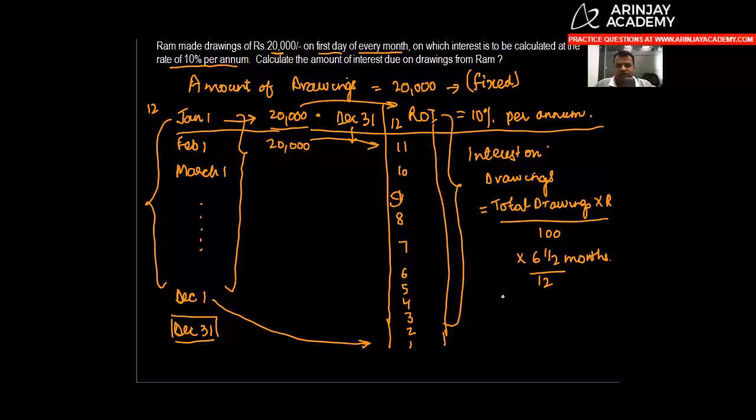You must be wondering how did I get the 6.5 months. The 6.5 months is nothing but an average of all these months taken together. When you add all these months, what do you get?